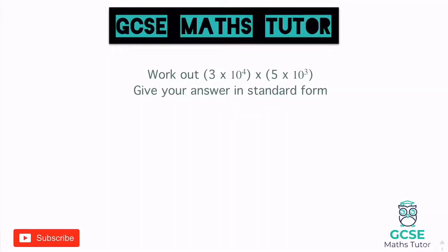We're going to have a look at standard form calculations. Grab a piece of paper, grab a pen, make some notes. Work out 3 times 10 to the power of 4 multiplied by 5 times 10 to the power of 3. Give your answer in standard form.